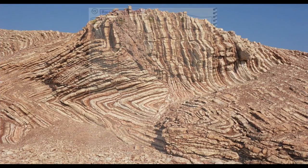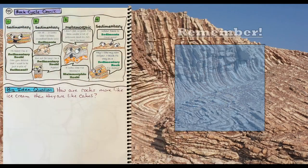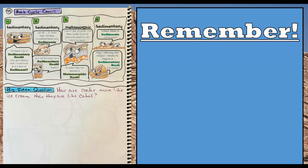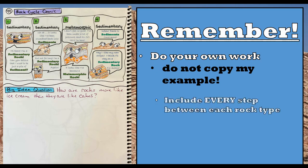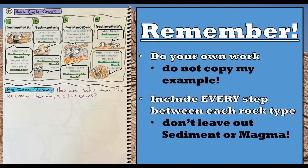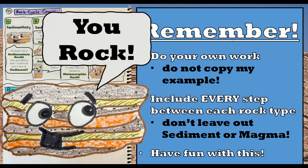And that's it — this is what notebook page 48 should look like by the time you are finished with your comic strip. Please remember: do your own work and do not copy my example. Include every step between each rock type. If you do have igneous rocks, don't forget that it has to melt into magma before it turns into a new igneous rock. And finally, have fun with this — because you rock.